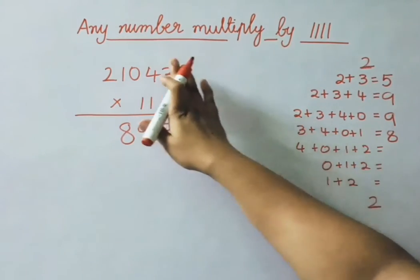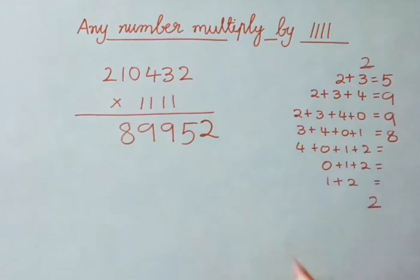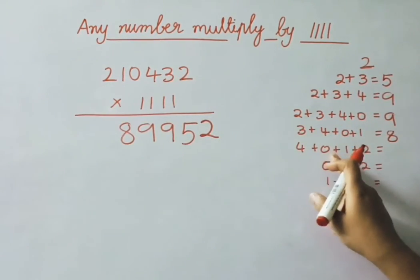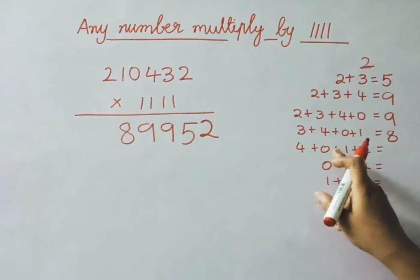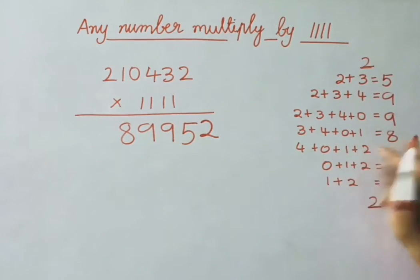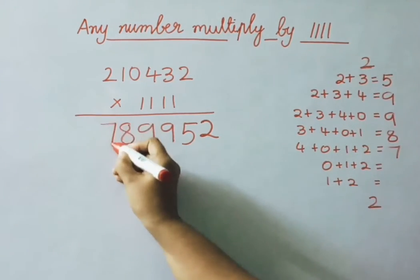Now leave the first 2 digits. Next 4 digits we must add: 4 plus 0 is 4, 4 plus 1 is 5, 5 plus 2 is 7. Write down the answer here: 7.